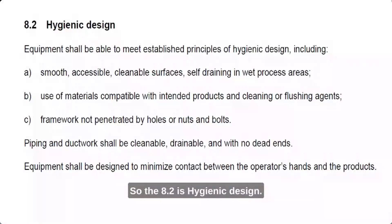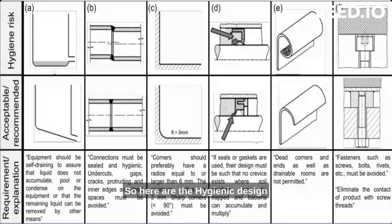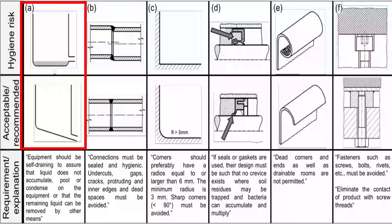Clause 8.2 is Hygienic Design. There are three main points covered here. I have prepared slides to illustrate the recommendations. The first example shows that the drain should be at the bottom level of silos so that all material can drain out completely — this is what hygienic design means.